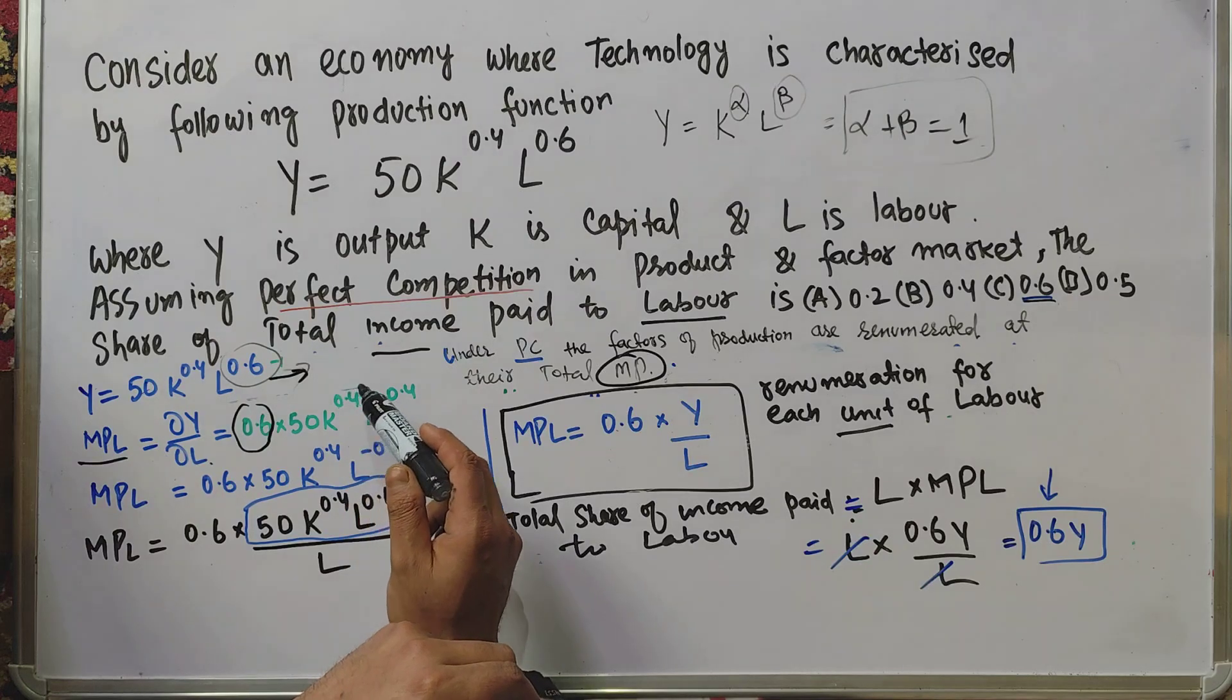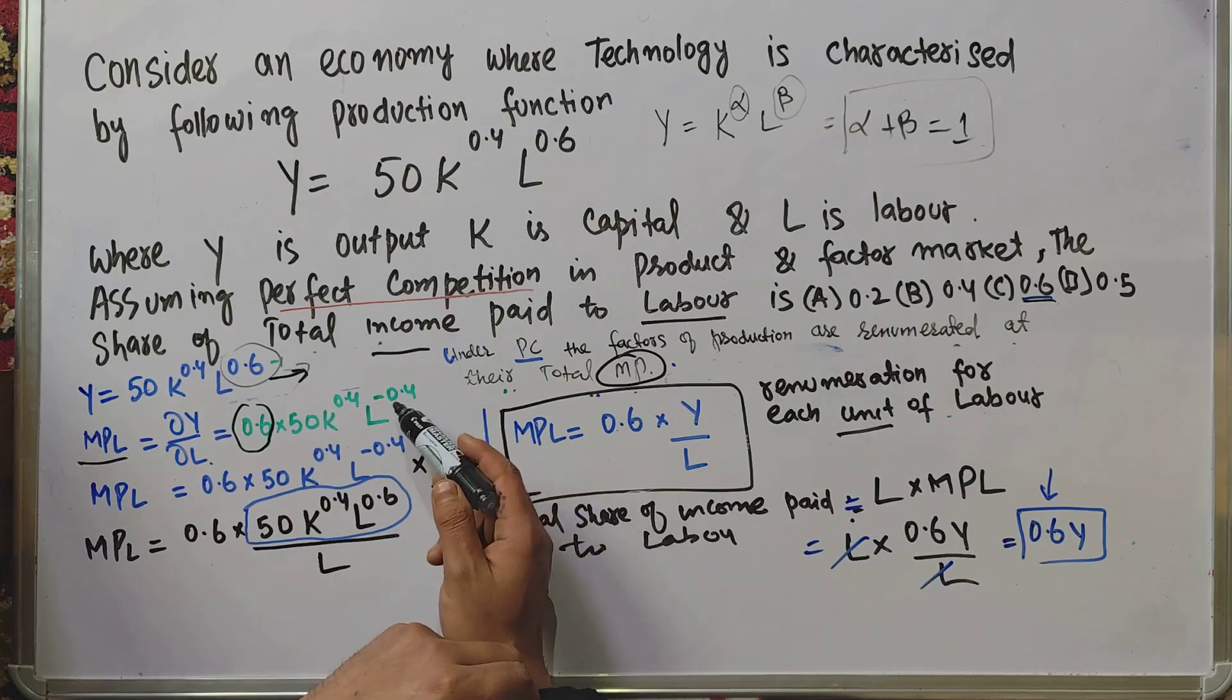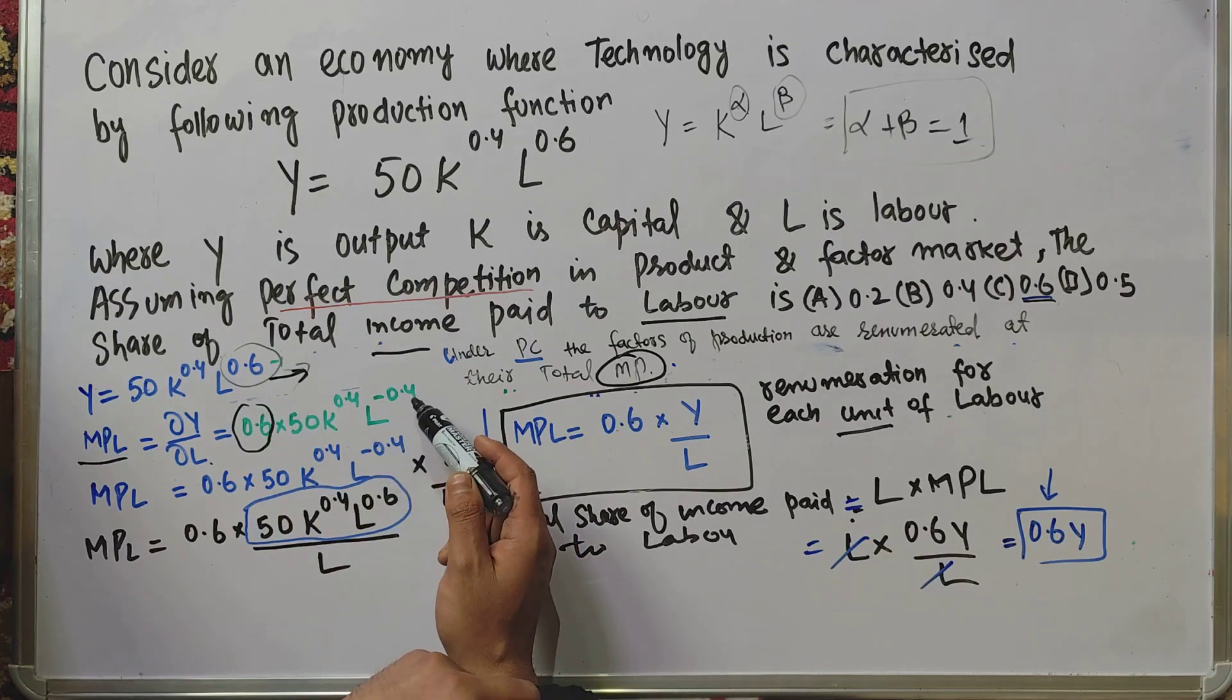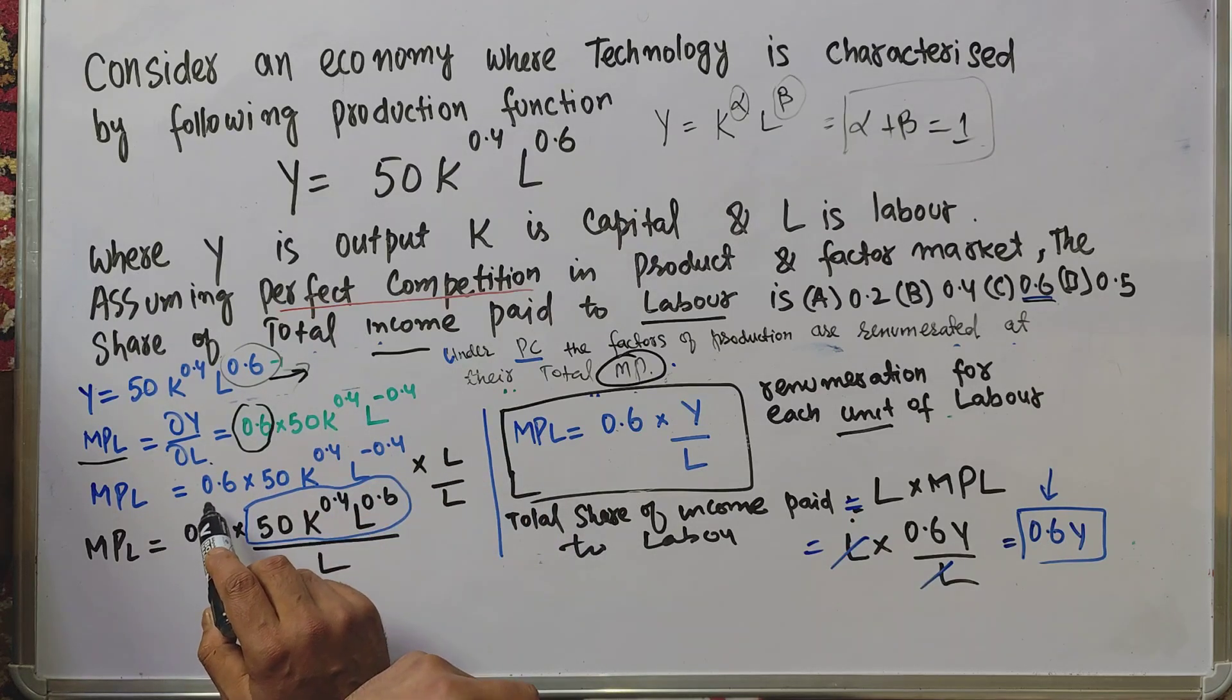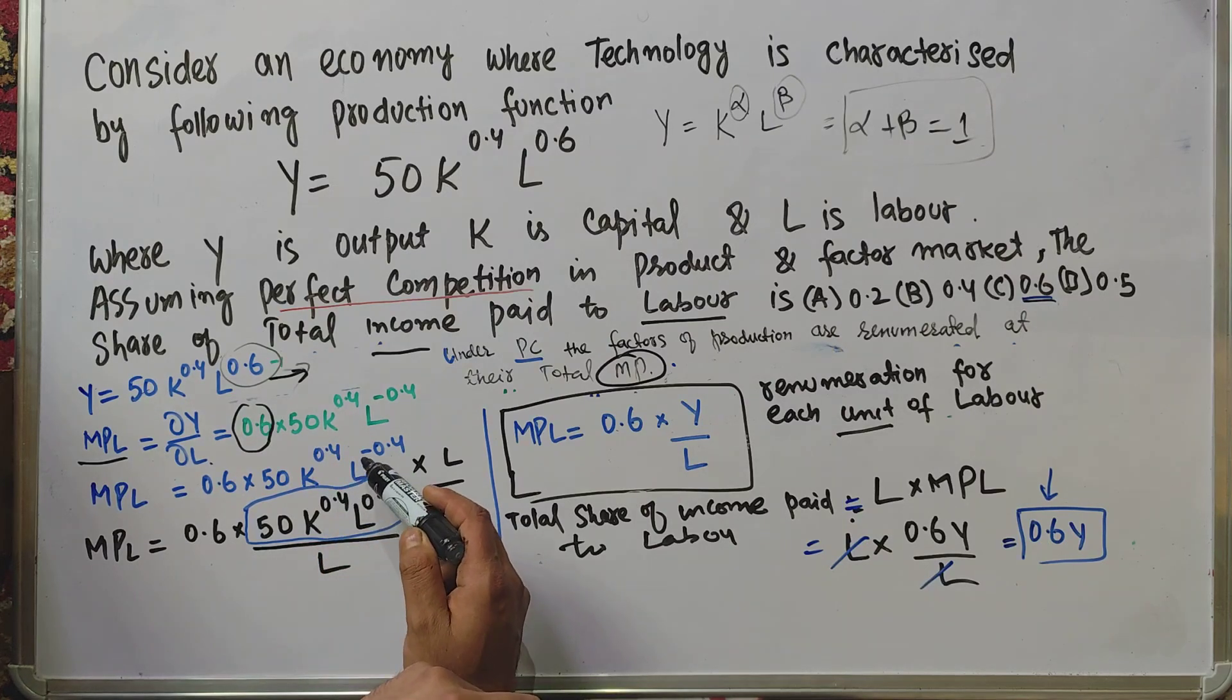The exponent of L gets subtracted by 1, so it becomes 0.6 - 1 = -0.4. The marginal product of labor comes out to be MPL = 0.6 × 50K^0.4 L^-0.4.